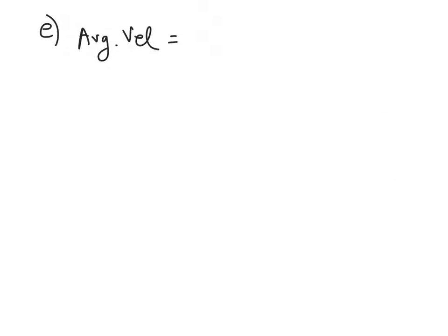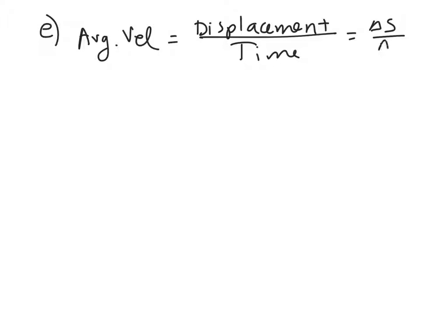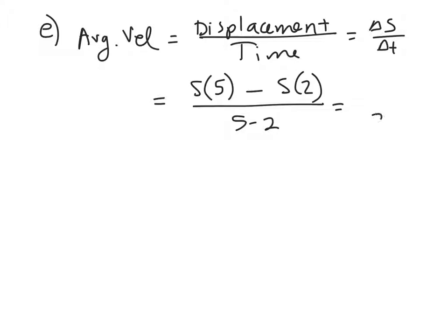Part e: we're finding average velocity of the particle during the interval from two to five. Average velocity is displacement over time, or delta s over delta t — change in position over change in time. So I plugged in five and two into the position function: s(5) minus s(2), over five minus two, giving three in the denominator. The numerator came out to be eight minus two, which is six, giving a final answer of two meters per second.